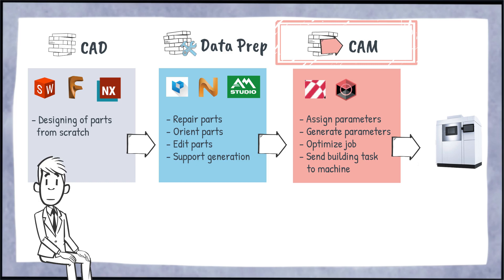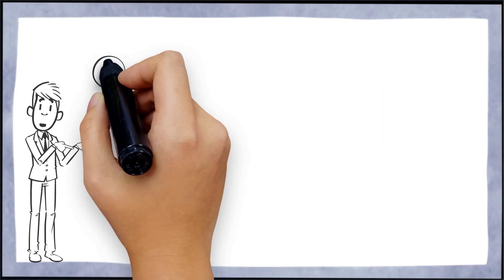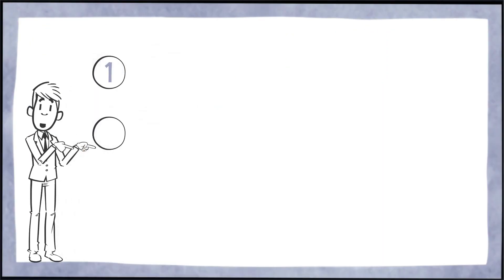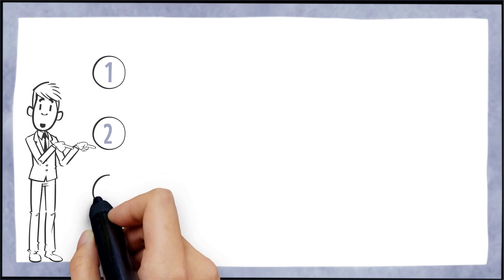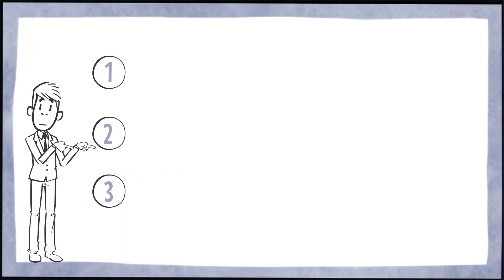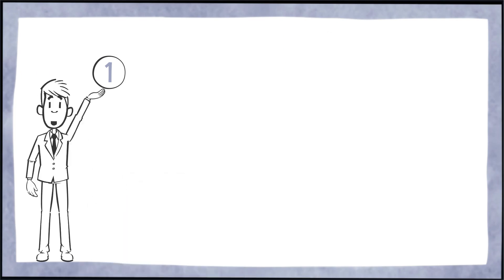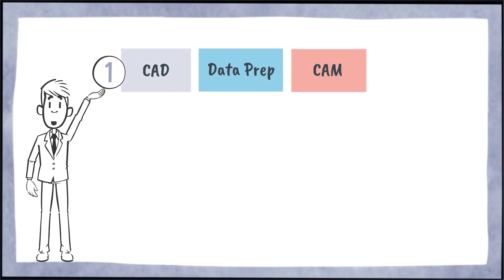Now I will show you three possible workflows that are connected with EOS software. One possibility is of course to use an extra software for each of these steps — for example, SolidWorks for CAD, Magics for part preparation, and EOSPrint for CAM.